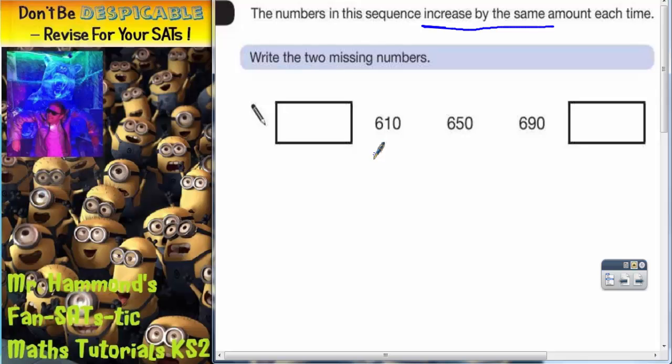Now let's have a look at what happens with this sequence. We've got a missing number at the start of the sequence and a missing number at the end of the sequence.